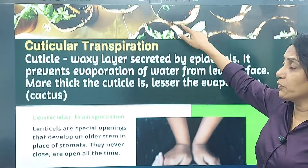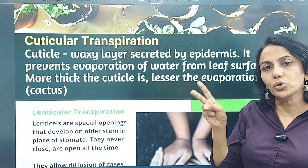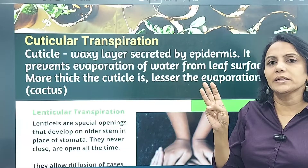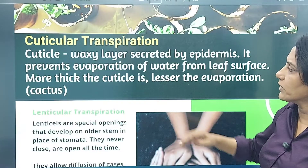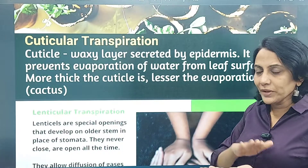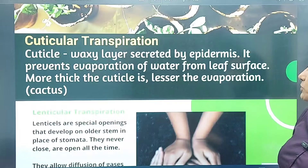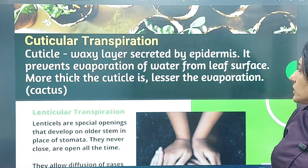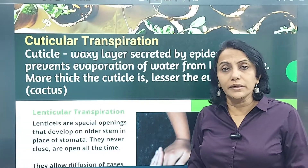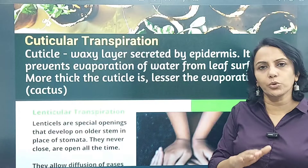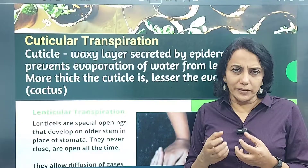Recapping the three types: stomatal transpiration, cuticular transpiration, and lenticular transpiration through the lenticels. Cuticular transpiration — the cuticle is a waxy layer secreted by the epidermis that prevents evaporation from the leaf surface. The thicker the cuticle, the lesser the evaporation. Plants in deserts have a thick cuticle to conserve water.